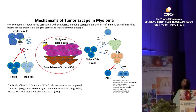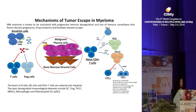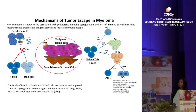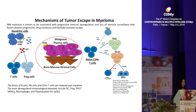Regarding CD4-positive cells, patients with myeloma are known to have very little Th1 phenotype — they don't produce much interleukin-2 or interferon-gamma, another reason why immunity is lacking in these patients. They are known to be more Th2, producing interleukin-10 and interleukin-4. More recently it has been shown they have a lot of Th17 phenotype, mainly triggered by TGF-beta and interleukin-6.